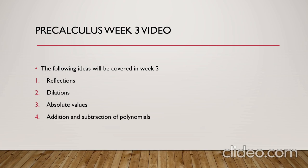The keyword for addition or subtraction of polynomials is like terms. Two terms are called like terms if they have the same variable and this variable has the same exponents. In order to add or subtract any two terms, we just add or subtract the coefficients of that term without changing the exponent of the variable.